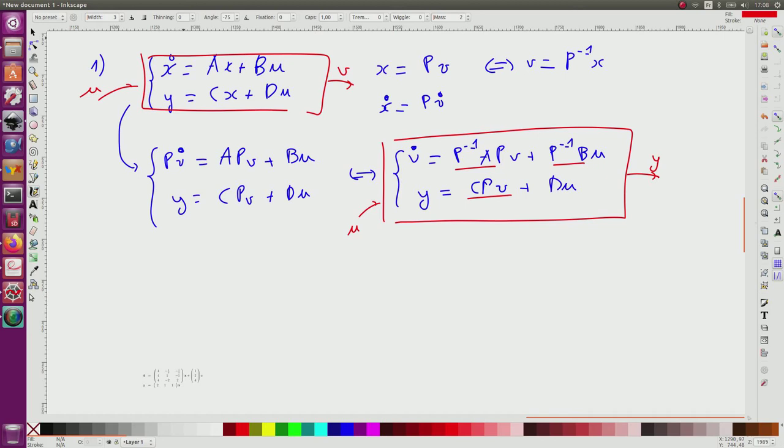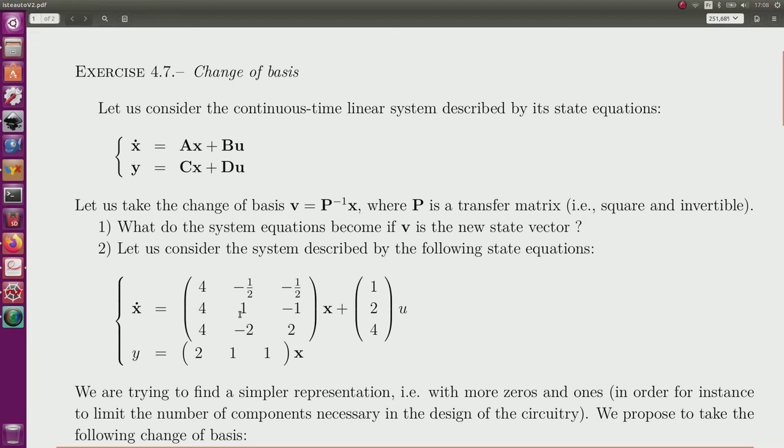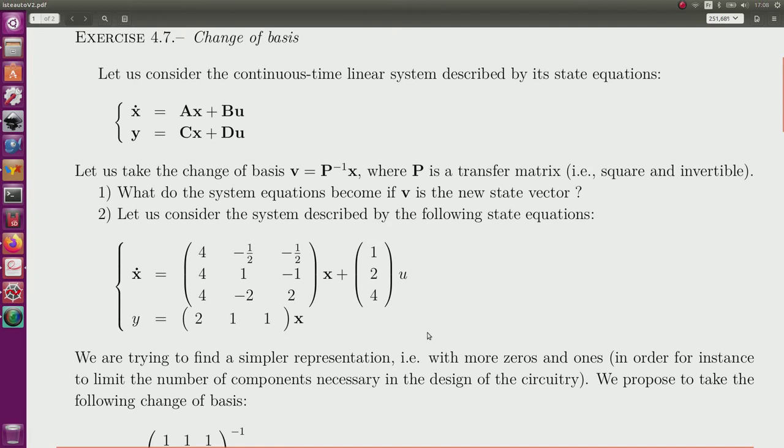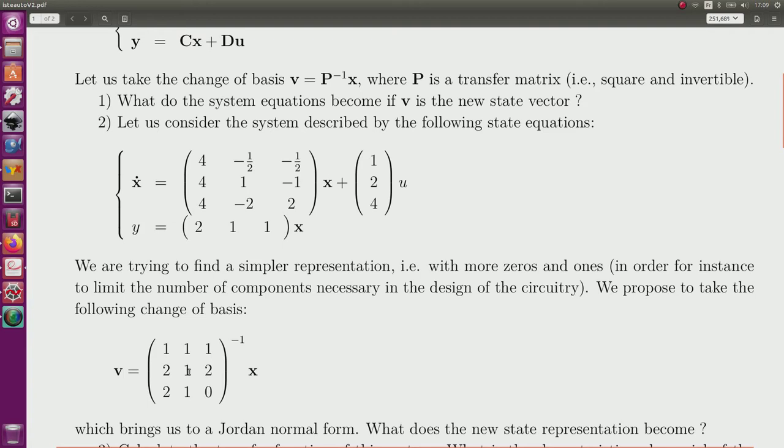Now I take the second question. We consider a specific system like this where there are no zeros, and we want to find a simpler presentation. For instance, if we have to simulate the system, due to the fact that there are no zeros, maybe it's interesting to change the basis to have less computation with more ones and more zeros. So we propose to change the basis by taking P, this matrix.